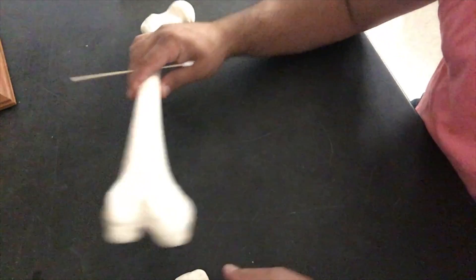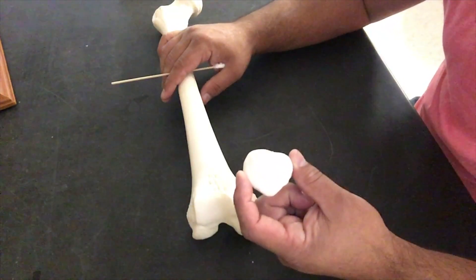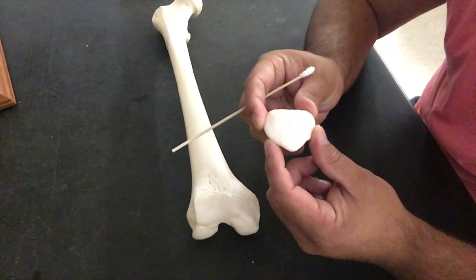So that's our right femur. Our patella, super easy, sesamoid bone, grows within tendons.